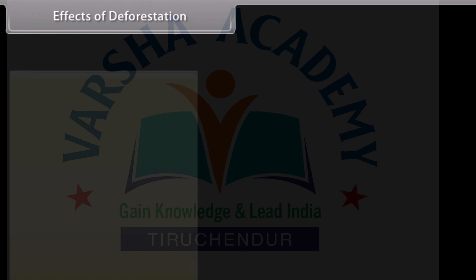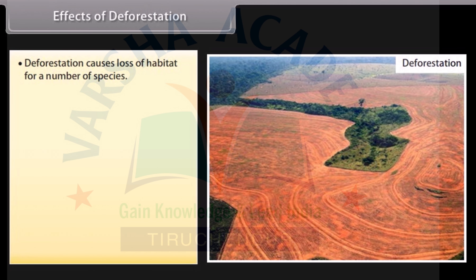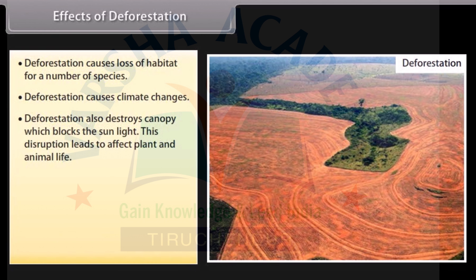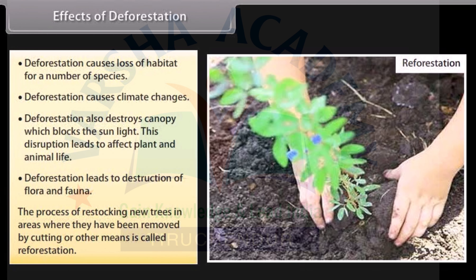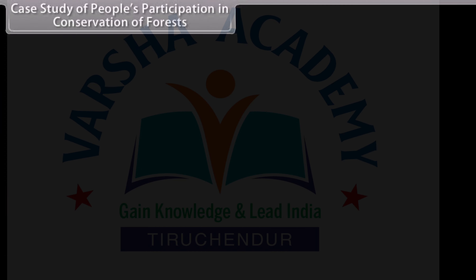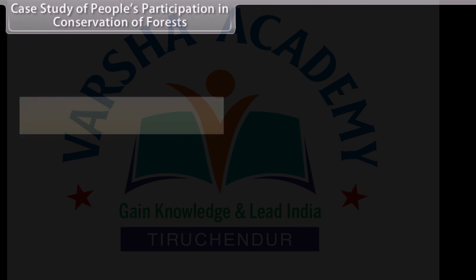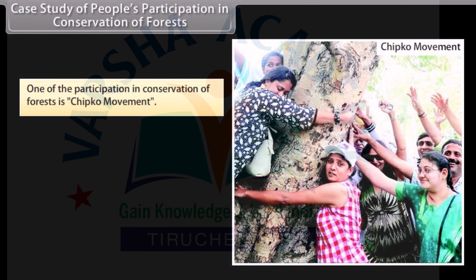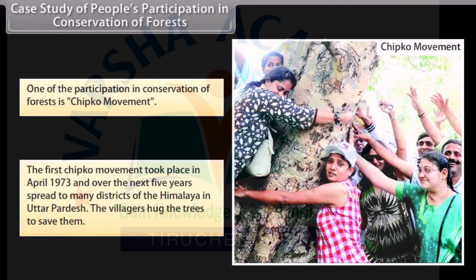Effects of Deforestation: Deforestation causes loss of habitat for a number of species. Deforestation causes climate changes. Deforestation destroys the canopy which blocks sunlight, disrupting plant and animal life. Deforestation leads to destruction of flora and fauna. The process of restocking new trees in areas where they have been removed by cutting or other means is called reforestation. One example of people's participation in forest conservation is the Chipko Movement. The first Chipko Movement took place in April 1973 and over the next five years spread to many districts of Himalaya in Uttar Pradesh. The villagers hugged the trees to save them.